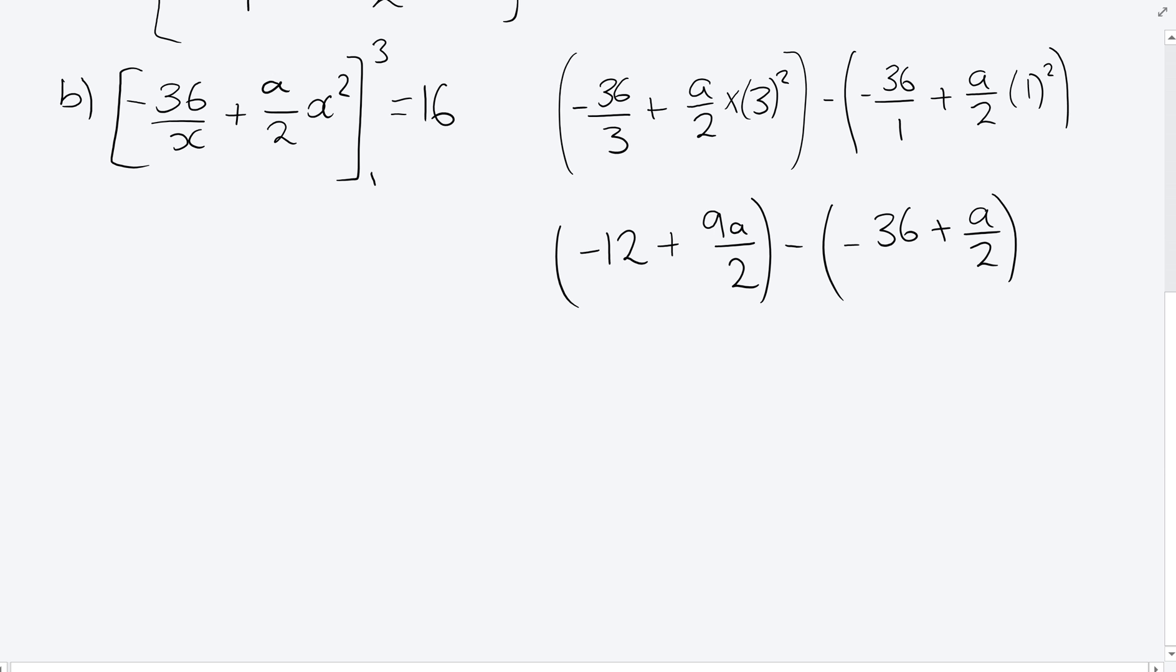Now a lot of students made mistakes at this point here. So let's just take our time to expand that second bracket. So minus 12 plus 9a over 2 plus 36 minus a over 2, because it's minus times by that plus. And I've forgotten to say so far, but all of that is equal to 16.